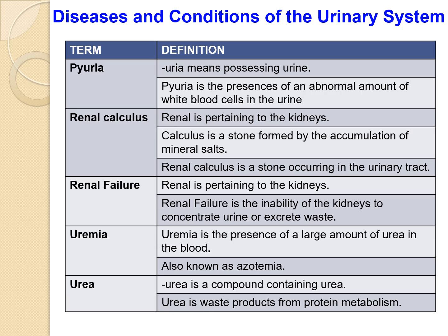Renal failure is the inability of the kidneys to concentrate urine or excrete waste. Uremia is the presence of large amounts of urea in the blood, also called azotemia. Urea is a waste product from protein metabolism.